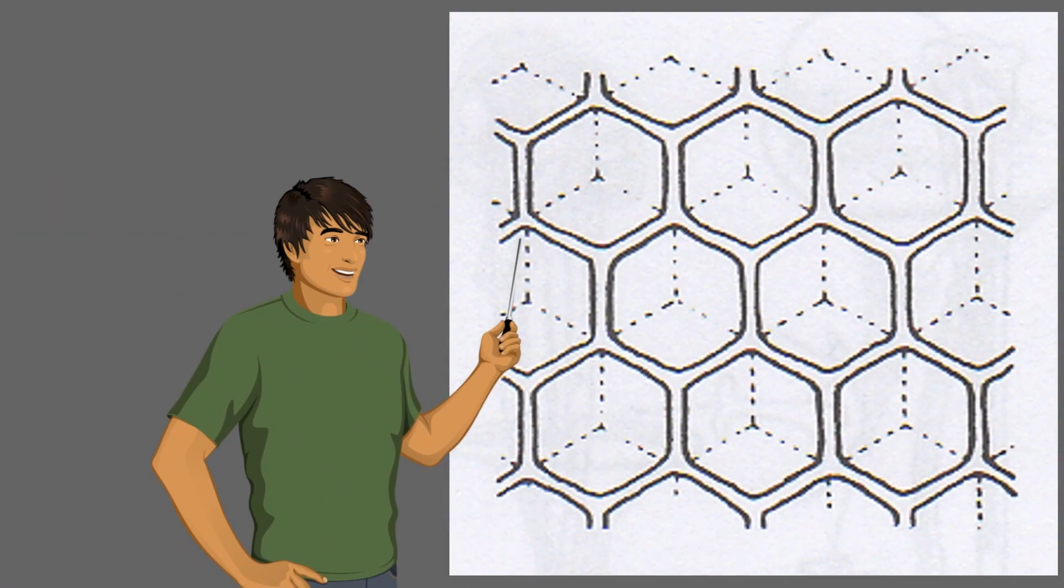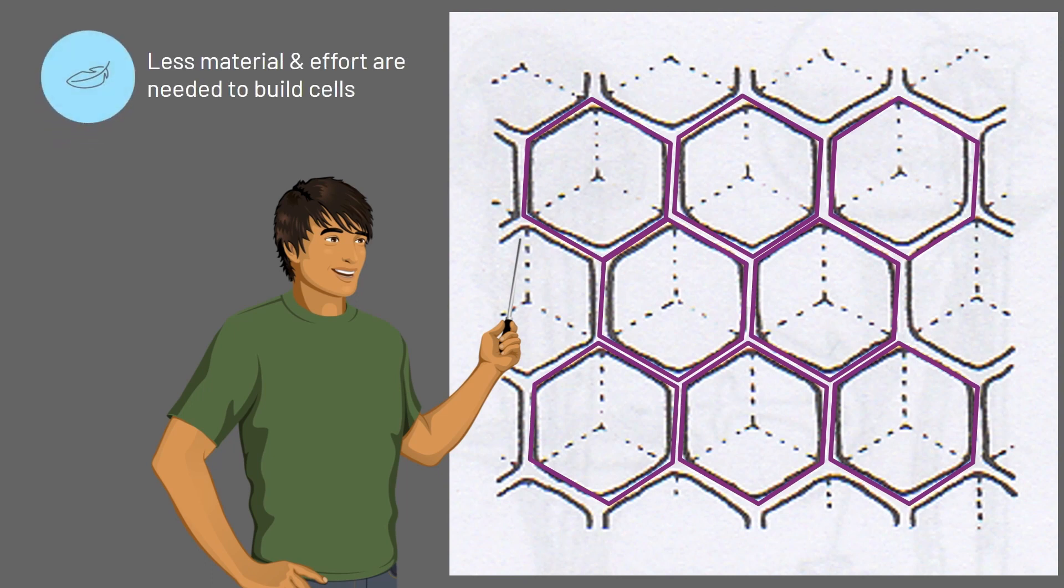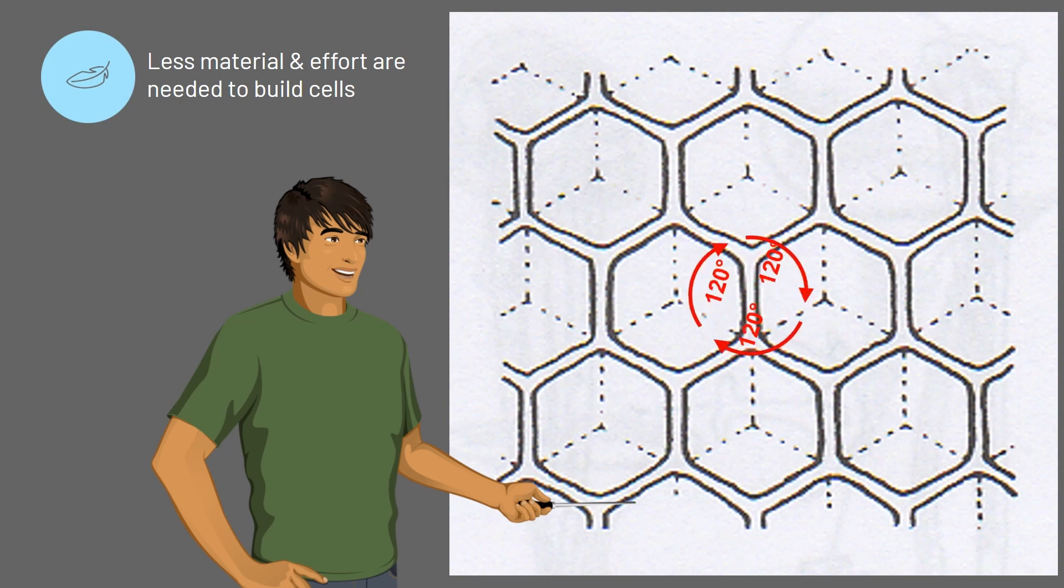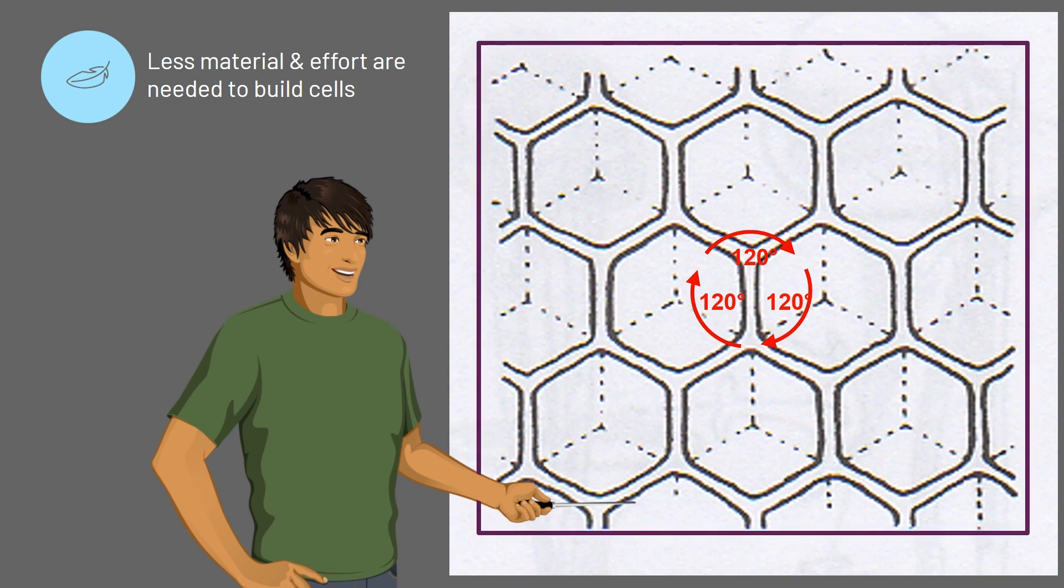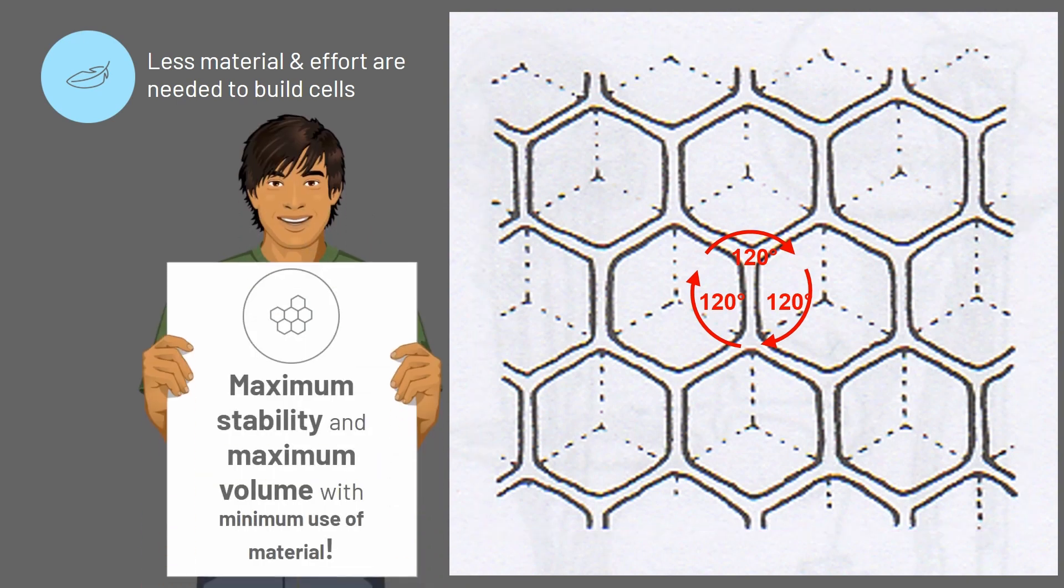When we take a look at the characteristics of a honeycomb, we see that each cell shares one of its six walls with the neighboring cell. This means that significantly less material and effort are needed to build them. The walls always meet at an angle of 120 degrees, the only angle at which stresses are distributed homogeneously over the entire structure. The hexagonal shape combines maximum stability and maximum volume with minimal use of material.